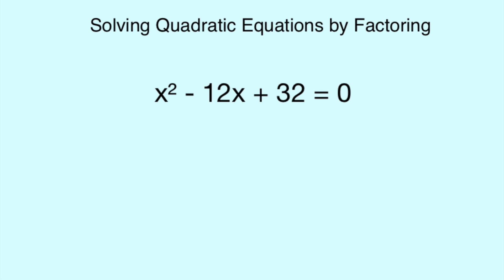The equation we have for you today is x² - 12x + 32 = 0.